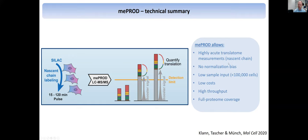It's a pretty standard proteomics workflow in general, so we need very few cells — much less than 100,000 — which also makes it quite cheap, especially when compared to doing ribosome profiling. You can do quite a good throughput — dozens of samples at a time — and you could have full proteome coverage.